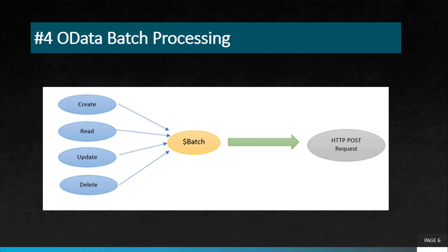The fourth project is OData batch processing. Batch processing allows you to perform multiple create, read, update, and delete operations together. All those calls are sent to the backend in a single call, where they are handled as multiple individual calls. These features are enabled using predefined OData functions.